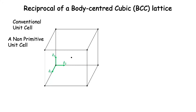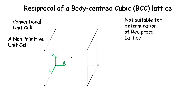A primitive unit cell should not have a lattice point anywhere other than the corners. Because the BCC conventional cell is a non-primitive unit cell, it is not suitable for determination of the reciprocal lattice, since the reciprocal lattice definition requires the use of a primitive unit cell. So we need a primitive unit cell for this.